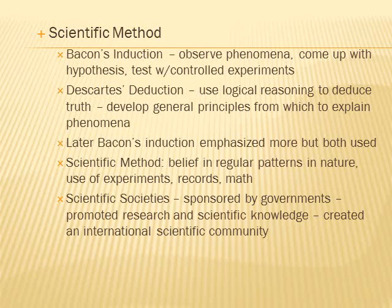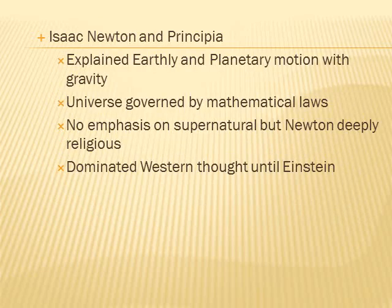Scientific societies were sponsored by governments. They promoted research and scientific knowledge and created an international scientific community. Isaac Newton and his book Principia explained earthly and planetary motion with the concept of gravity. He had his three laws of motion and argued that the universe was governed by mathematical laws with no emphasis on the supernatural in his scientific works — though Newton was deeply religious. His ideas would dominate Western thought until Einstein.